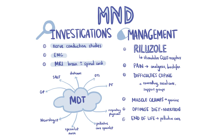Motor neuron disease is a clinical diagnosis. However, performing a nerve conduction study is useful to exclude the possibility of a neuropathy. In motor neuron disease, the motor conduction is normal. An EMG can be done, and it typically shows a reduced number of action potentials with increased amplitude.